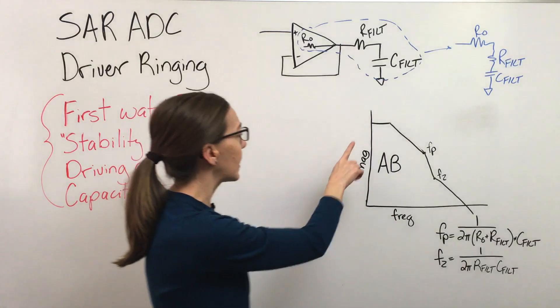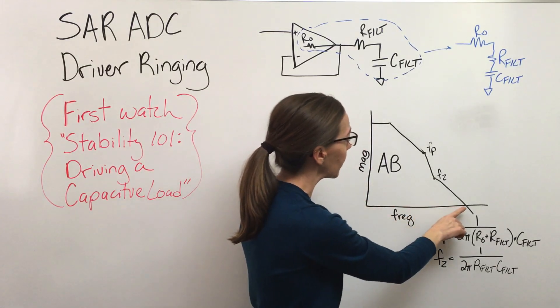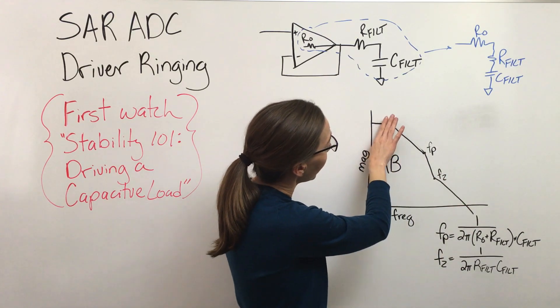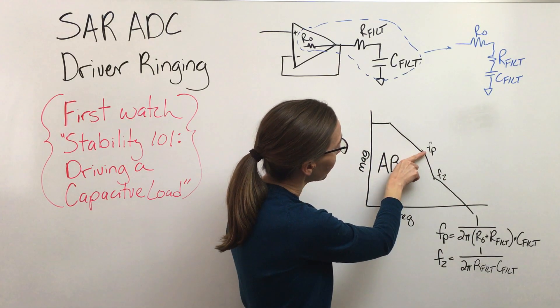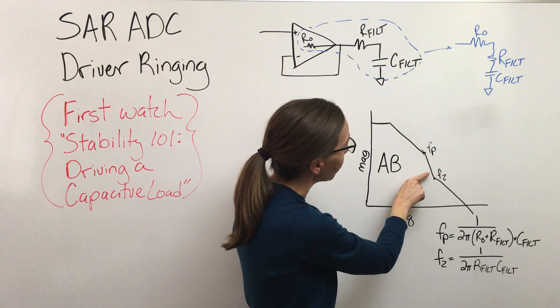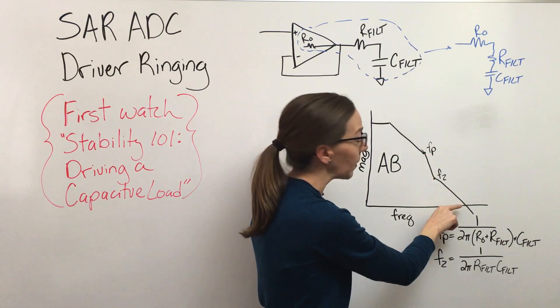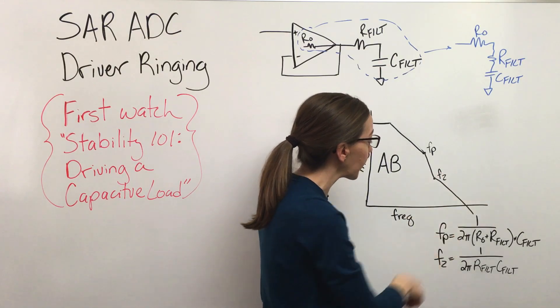A couple things to notice is this is a scenario where it looks like everything's probably going to be stable and there's not ringing. We've got our 90 degree phase shift and then we're transitioning into a 180 degree phase shift, but then this zero is pulling everything back up to 90 before we get to this zero dB crossing.